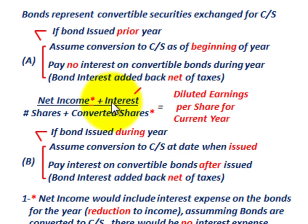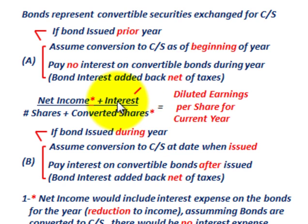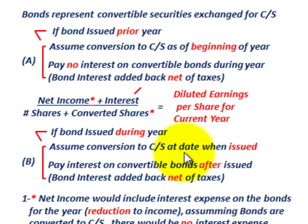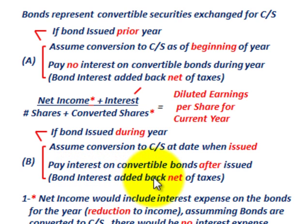The net income at this point would have included that bond interest expense, which is a reduction to income. Since the bonds were converted at the beginning of the year, the net income would have to be increased by adding back the interest expense, because there wouldn't be any interest expense based on that conversion. If the bond was issued during the year, you assume the conversion to common stock at the date it was issued, and the bond interest would again have to be added back net of taxes.